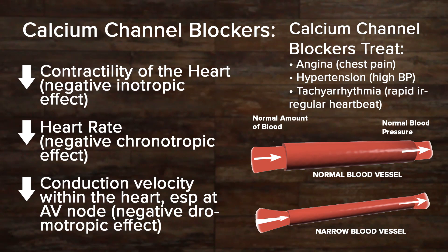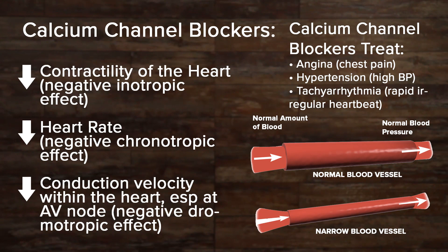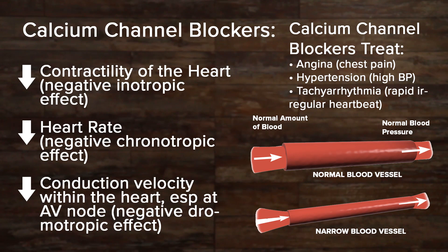They decrease the heart rate, a negative chronotropic effect. They decrease the conduction velocity within the heart, especially at the AV or atrioventricular node, known as a negative dromotropic effect.